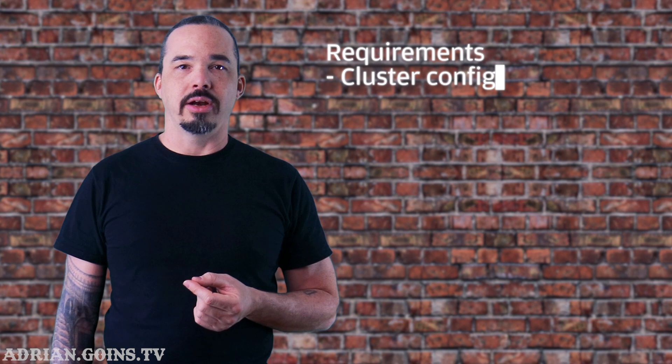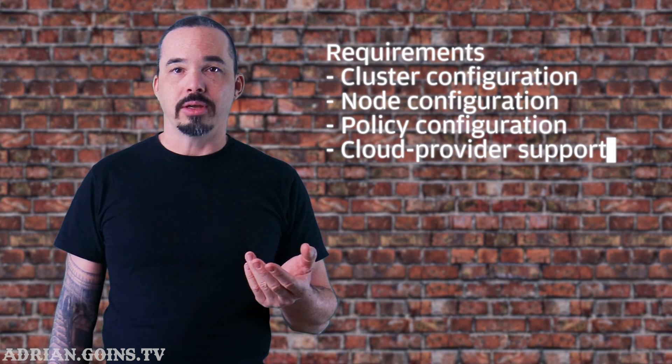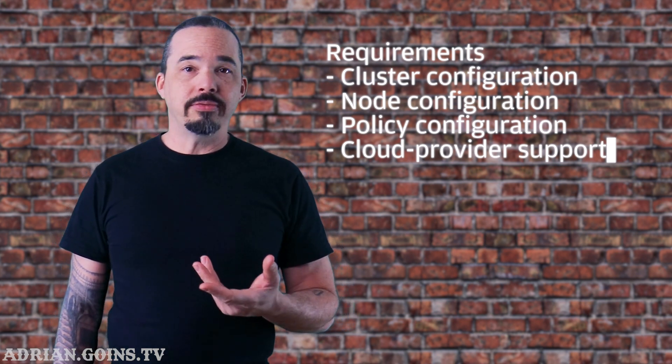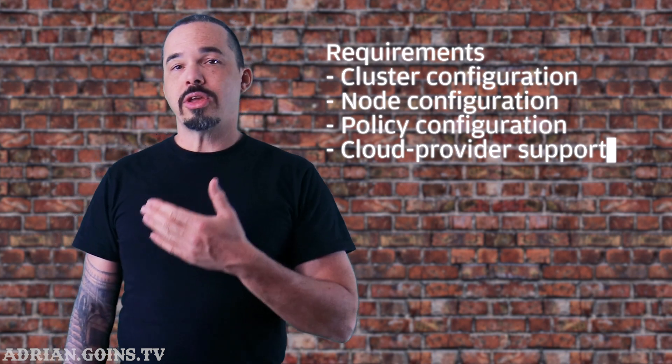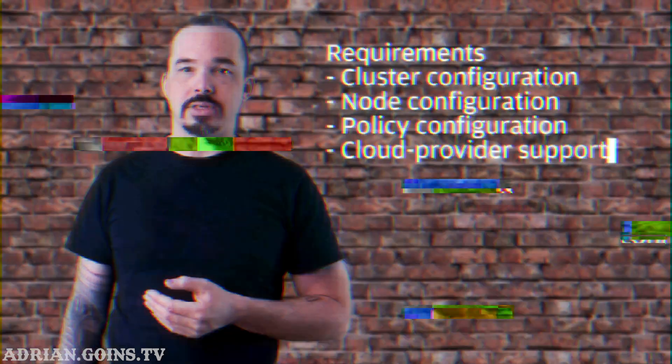The load balancer service type requires that the Kubernetes cluster know that it's running in a cloud provider, that it knows which cloud provider, and that it knows how to talk to it. This means you have to set up security policies for your Kubernetes nodes when you deploy them, granting them permission to create load balancers in the provider's network. It means that you have to be running your cluster in one of the handful of providers that Kubernetes knows how to talk to, or that you're using a hosted Kubernetes solution like DigitalOcean, who runs a modified version of Kubernetes that integrates with their services. If you don't set up your nodes correctly when you launch them, you either can't use the load balancer service, or you have to rebuild the cluster.